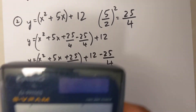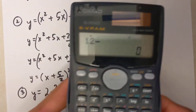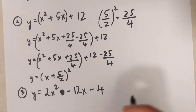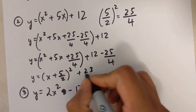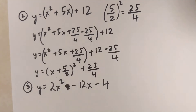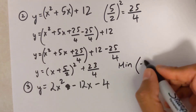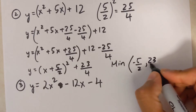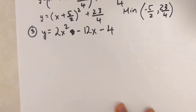Combining the remaining terms in the calculator: 12 minus 25 over 4 equals 23 over 4. Since the a value is positive it's a minimum, with x value negative 5 over 2 and y value 23 over 4. I'd suggest watching all six examples in this video as they are all slightly different and get harder.